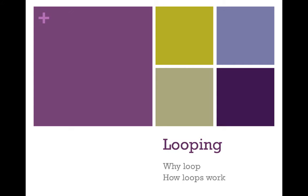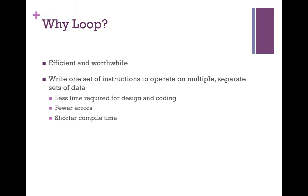Although making decisions makes computers seem intelligent, looping is what makes computer programs efficient and worthwhile. When you use a loop, you have one set of instructions that operate over and over again until a condition is met. This means we can use fewer instructions, our programs take less time to design and to code, and we can also have fewer errors and a shorter compile time.